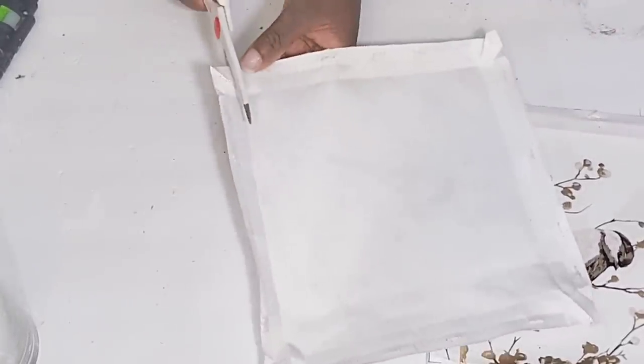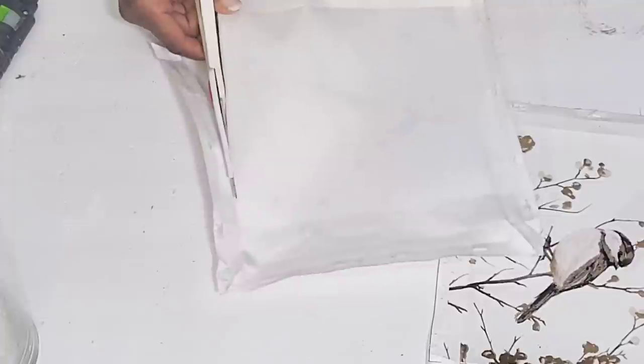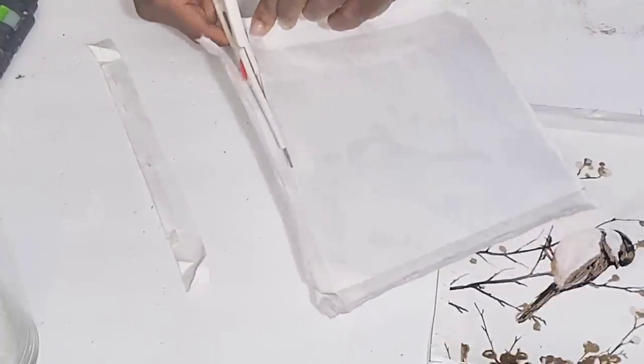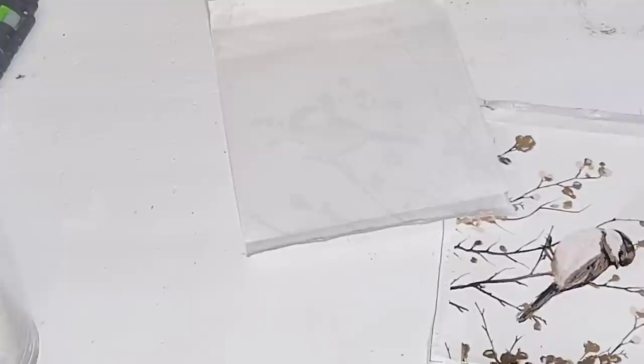I'm just going to cut off where the canvas was folded around the frame. And I'm just going to do the sides. I'm going to keep the bottom two pieces.